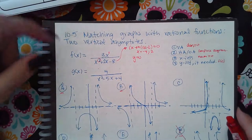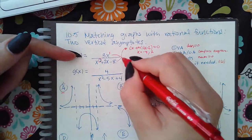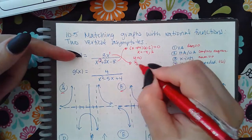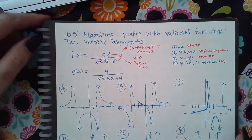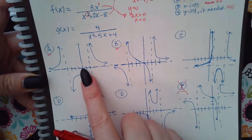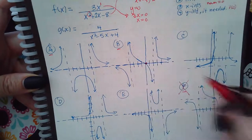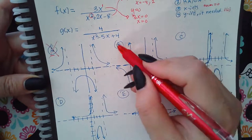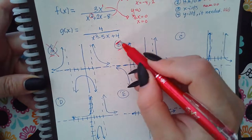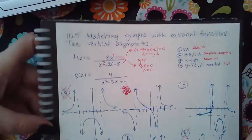The next thing we're going to do is find the x-intercepts. We set the numerator equal to zero and get x equals zero, so we're looking for the intercept at (0, 0). Graph A does not have the x-intercept at zero, but graph B does. So A is eliminated and the answer for function f is B.